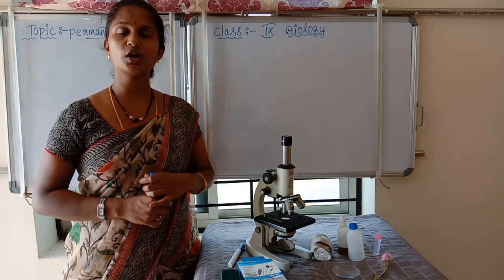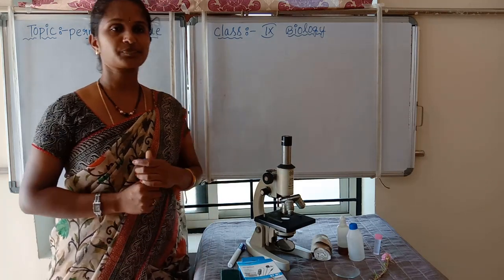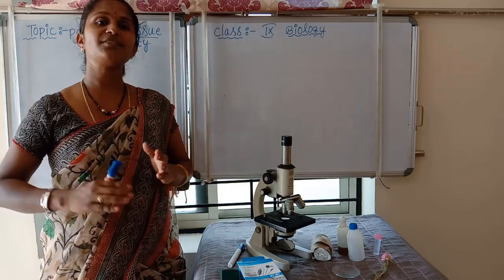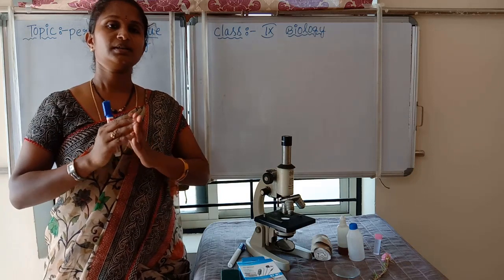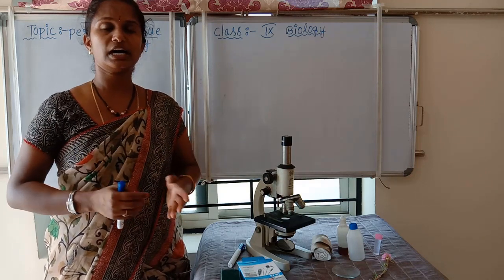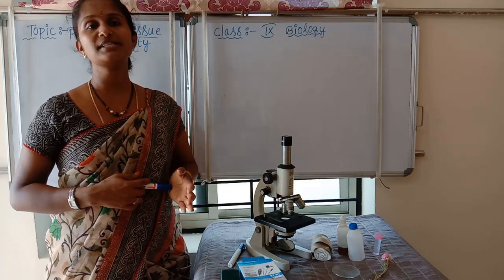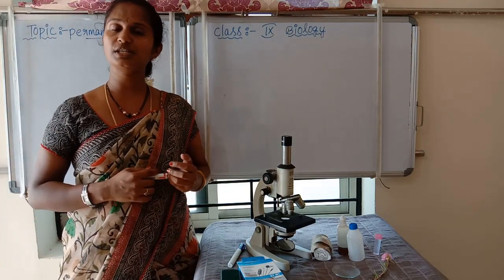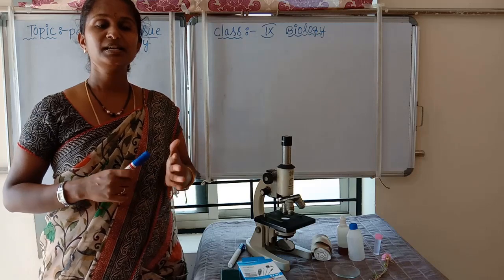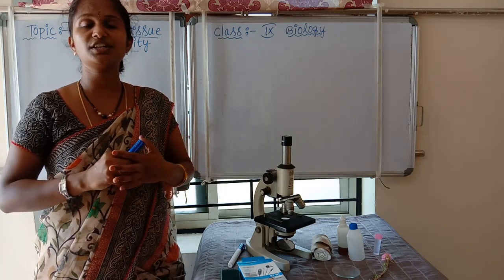In the last class we also discussed about the permanent tissue. The meristematic tissue, as it increases its lifespan, turns into a permanent tissue. It takes on a specific role and loses the ability to divide, forming permanent tissue. Because of permanent tissue, plants have their shape, size, and strength, and these permanent tissues are differentiated into many types of cells.